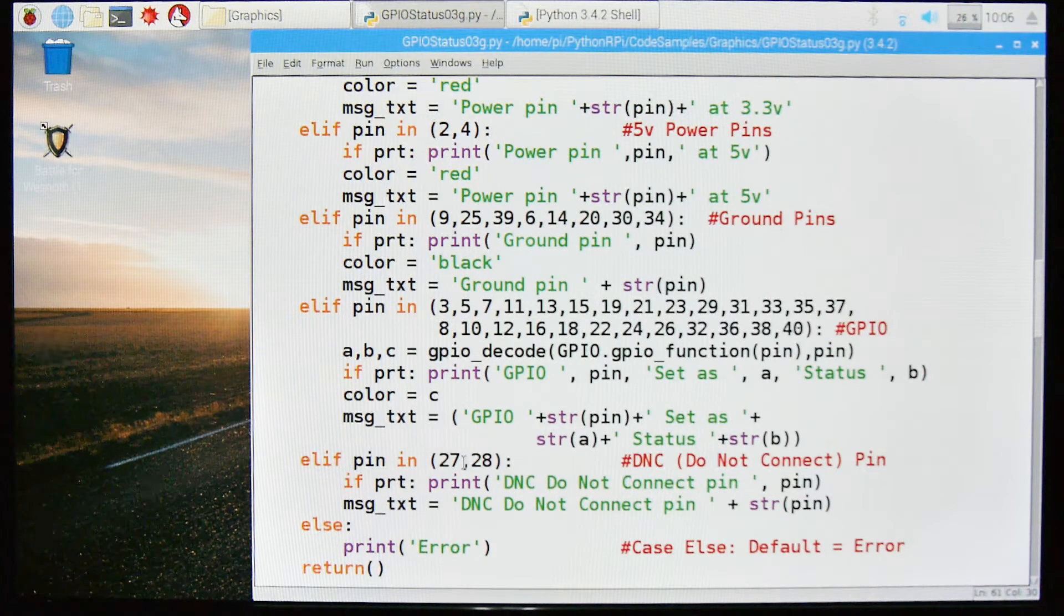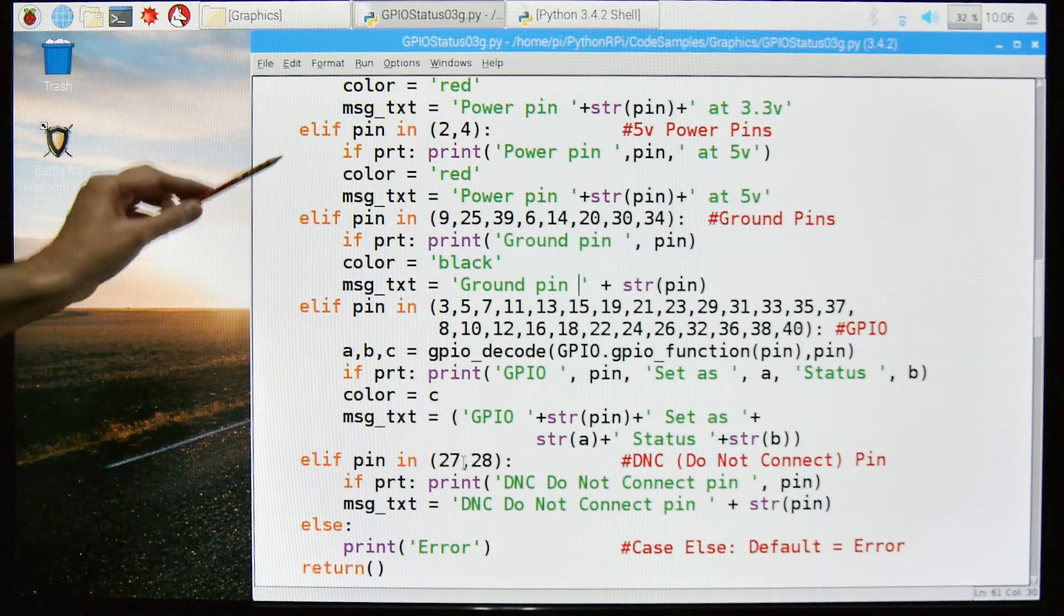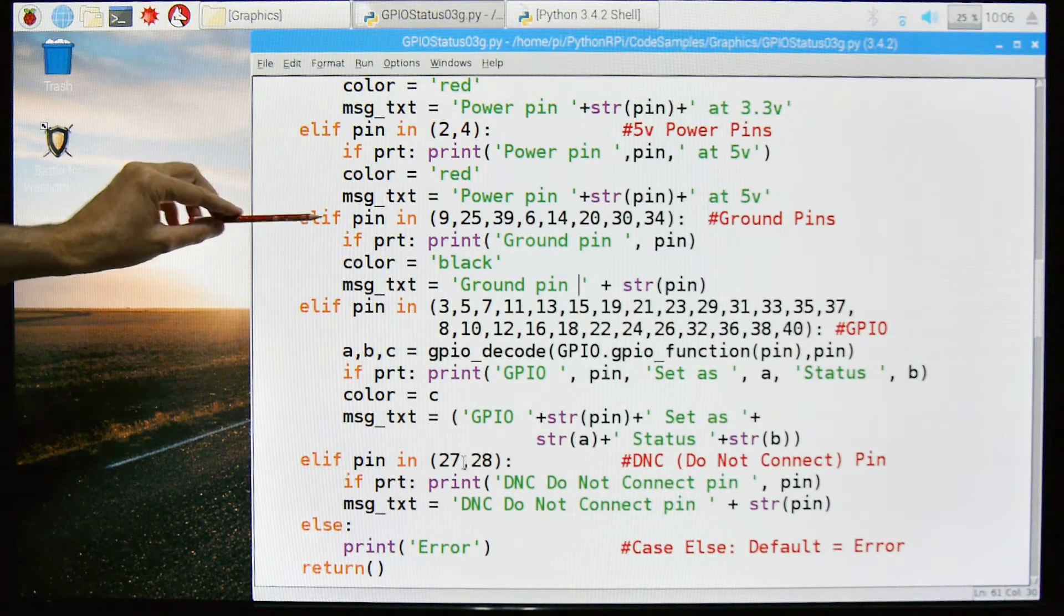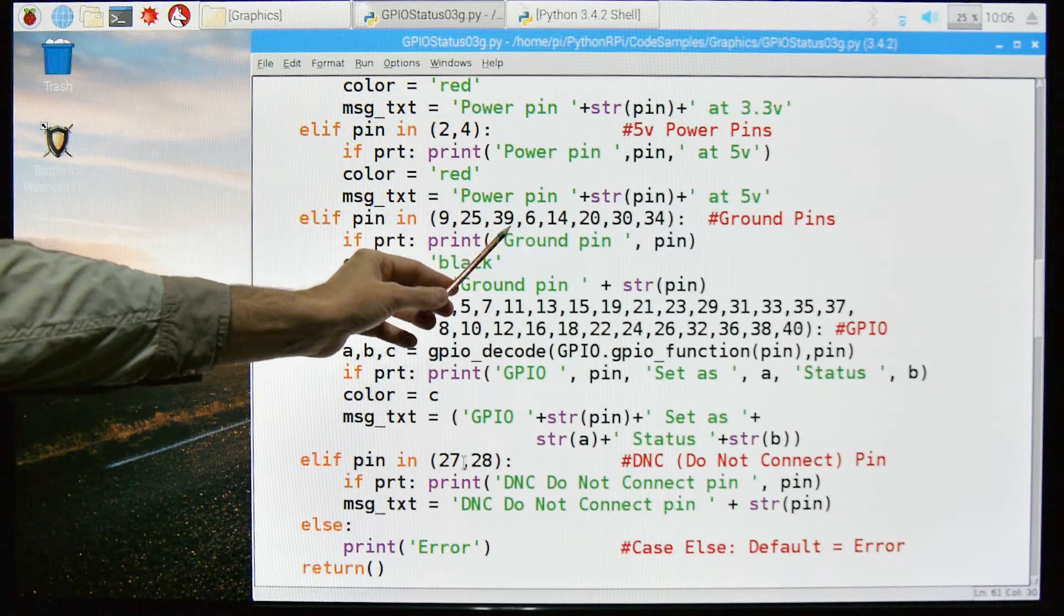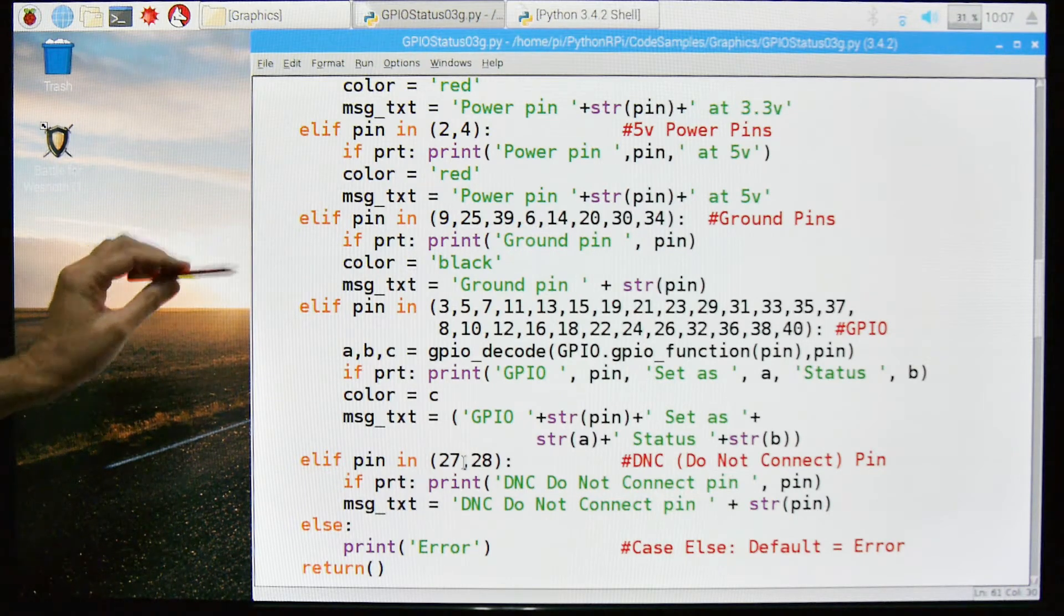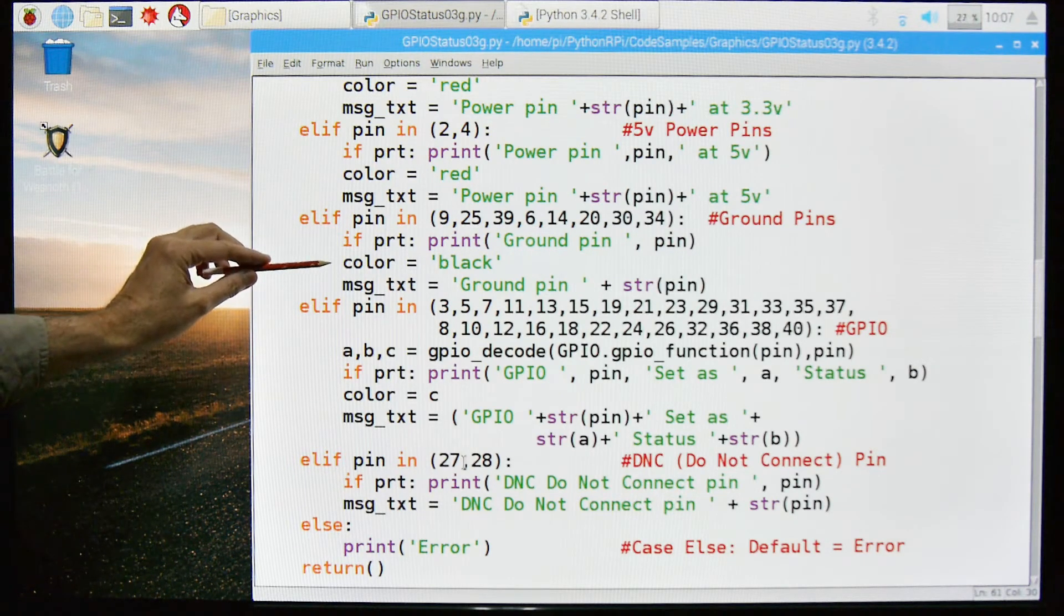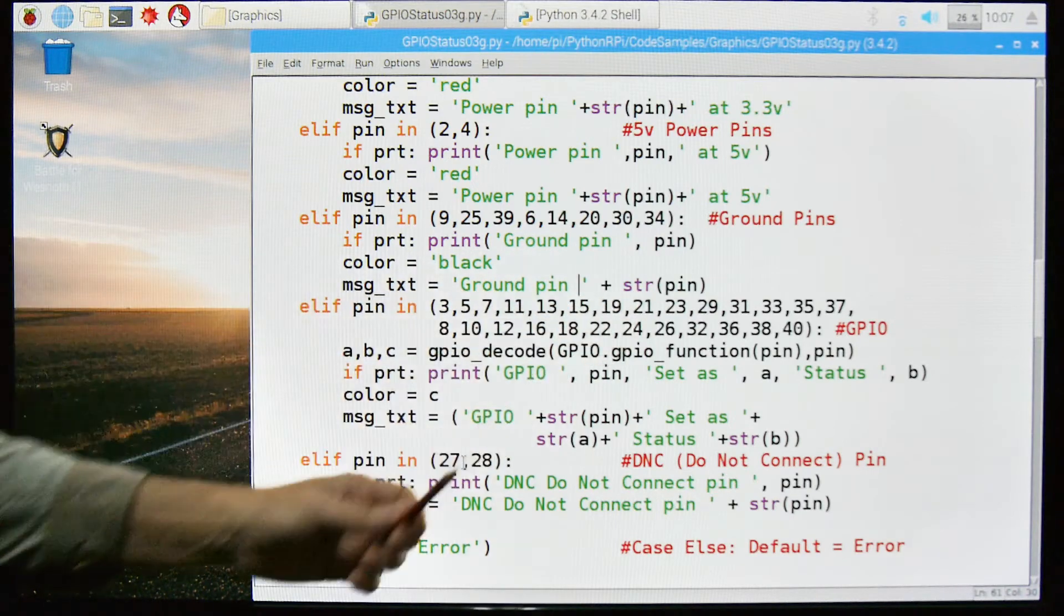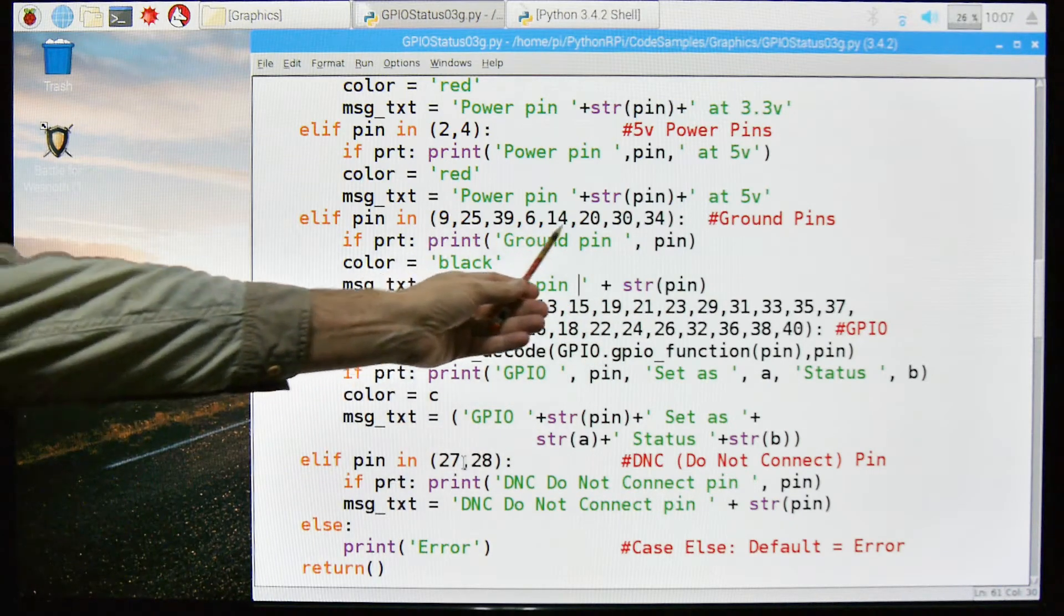The power PINs aren't that interesting since there's no real logic to them, it's just a fact of life. If the PIN is in 9, 25, 39, 6, 14, 20, 30, and 34, those are ground PINs. For ground PINs I have set the color to be black and the message is ground PIN plus the string of the PIN, so it's any one of those numbers.